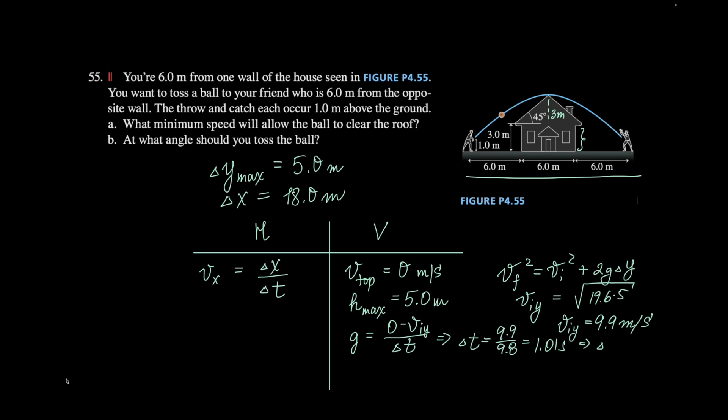So then the total time will be 2.02 to clear those 18 meters. So then your vx is going to be 18 divided by your 2.02.